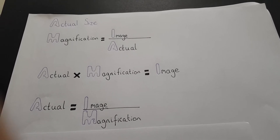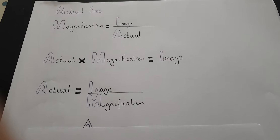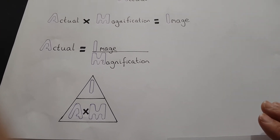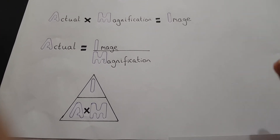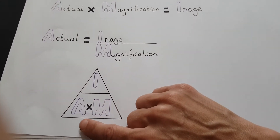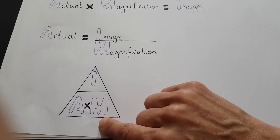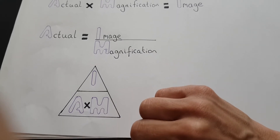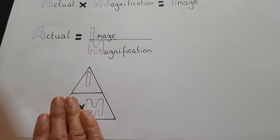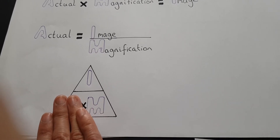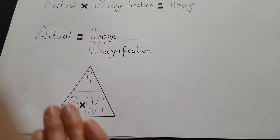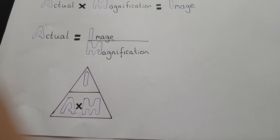Some people prefer to use a triangle to work that out. For that, you think of 'I AM' — image size on the top, and then actual size times magnification on the bottom. You cover up whatever you want to find out. In this case, you want to find out the actual size, so you cover that up and you're left with image divided by magnification. That's what we need to do as a calculation.